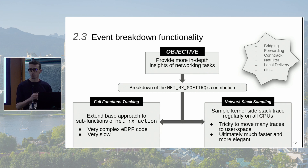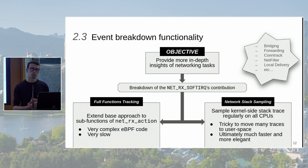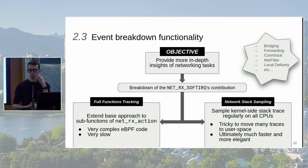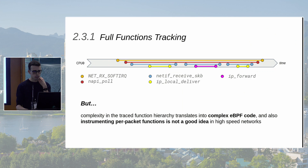Network stack sampling works by sampling the kernel-side stack trace on all CPUs at regular intervals using eBPF, then moving all these traces to the user-space controller for analysis. It uses an eBPF program attached to a perf event set up to trigger at a fixed frequency on all CPUs. The end result is much cleaner, more elegant, and much faster.